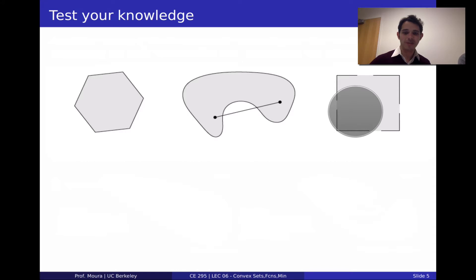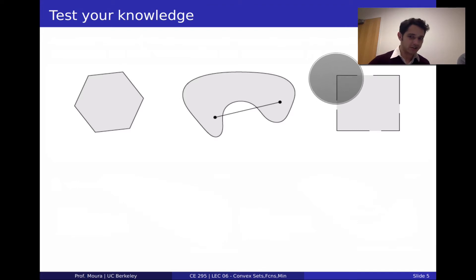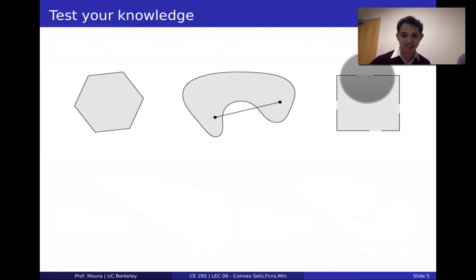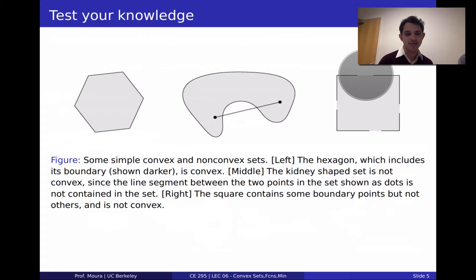This third example is a bit more challenging. Nate identified that it's not convex — you could pick the upper left-hand corner as point A and the upper right-hand corner as point B, draw a line segment between them, and the part of that line segment passing through the gap would violate the definition. This is a tricky case you might find on exams.